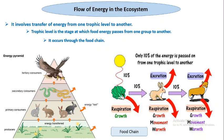In the food chain, green plants capture sun energy, do respiration, and transfer 10% of energy to another organism — the rabbit. The rabbit carries out excretion, respiration, growth, movement, and warmth, using energy. What is left — 10% — is again transferred to the next organism, which does the same metabolism. In this way, energy flows in the ecosystem through the food chain from one organism to another.